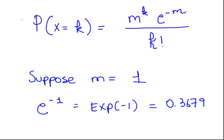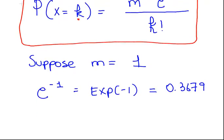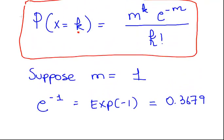So this is the formula we will be working with — this is very important. It is written in terms of M, but you could also write it in terms of lambda by substituting lambda for M. The formula is: M to the power of K, times E to the power of minus M, divided by K factorial. Where K is the number of occurrences we're interested in.